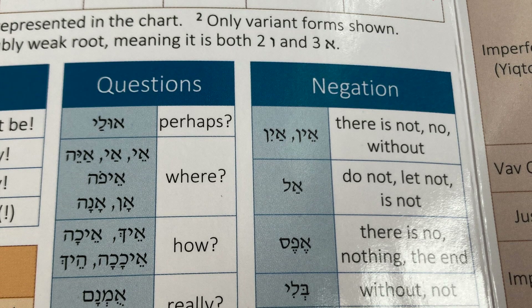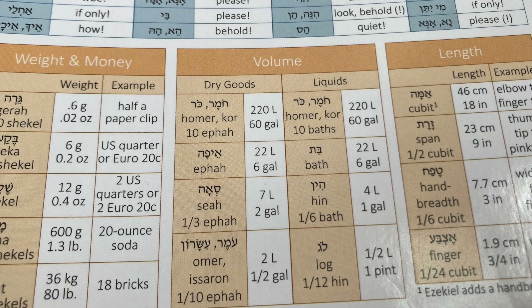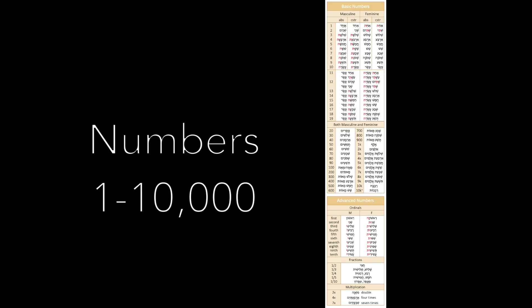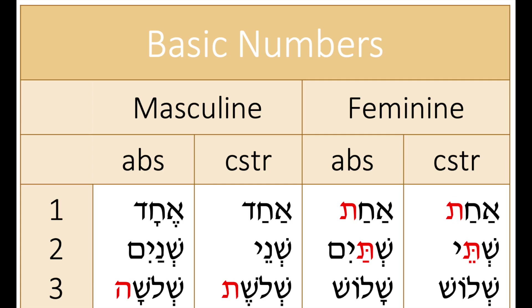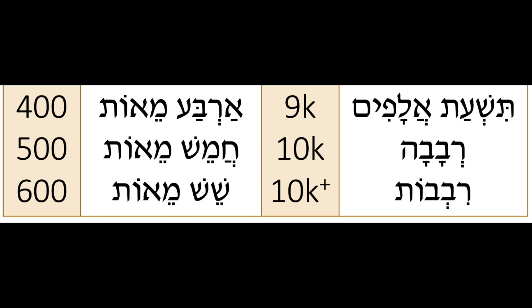There was some extra space, so I included charts on weight and money, volume and length. And finally, I wanted to make sure there was a detailed, lengthy chart for numbers, because numbers are very, very fussy in Biblical Hebrew. I have every form from the number 1 all the way to 10,000.